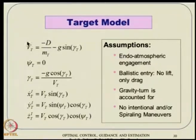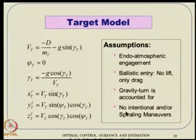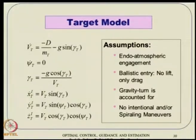Assumptions about the target dynamics: first, we assume endo-atmospheric engagement; second, we assume ballistic re-entry — meaning no lift, only drag. Gravity turn is accounted for. No intentional evasive or spiraling maneuvers — and no unintentional ones either. Sometimes spiraling maneuvers are unintentional due to the physics of the problem, and that is reality. But in this particular experiment, we are proposing a new concept and so we start with non-spiraling targets that still have drag as a major component.